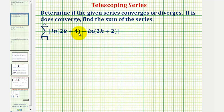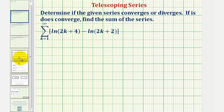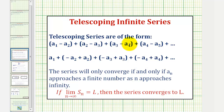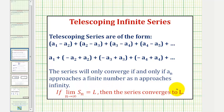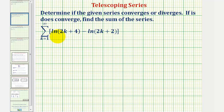This is an example of a telescoping series, where if we expand the terms in the series, we'll notice that several of the terms will be opposites and simplify out. So our goal will be to find a simplified formula for the partial sum, and then if the limit as n approaches infinity of the partial sum equals L, then the series converges to L. We'll begin by determining several terms in the series until we discover the pattern to find our simplified formula for the partial sum.